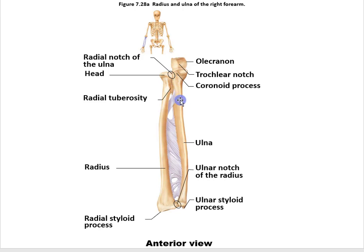Working our way down, there's also an ulnar notch on the radius itself. The ulna articulates with the ulnar notch of the radius, though there's no specific name for that part of the ulna. At the distal ends of both bones are the styloid processes — slender projections, one on the radius and one on the ulna. You can easily feel the radial styloid process on the thumb side of your wrist, and the ulnar styloid process on the other side.